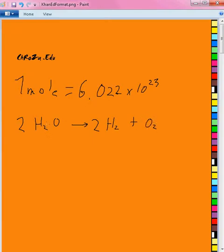If I multiplied those two molecules of water times 6.022 times 10 to the 23, I would have two moles of water, and I would have two moles of hydrogen on the product side plus one mole of oxygen gas.